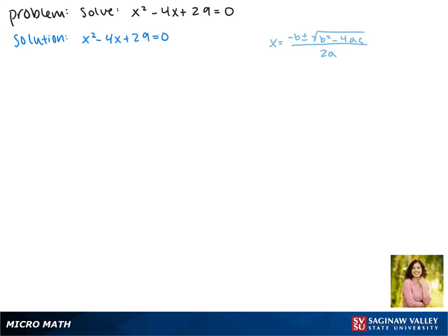So plugging in our values here we get x equals positive 4 plus or minus the square root of -4² minus 4 times 29 times 1, all divided by 2 times 1.